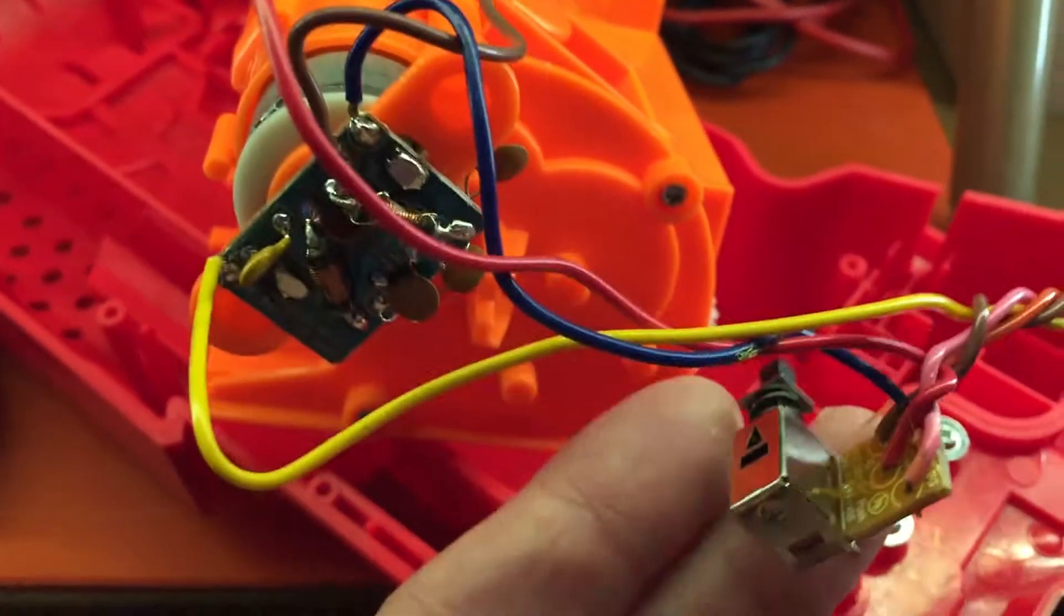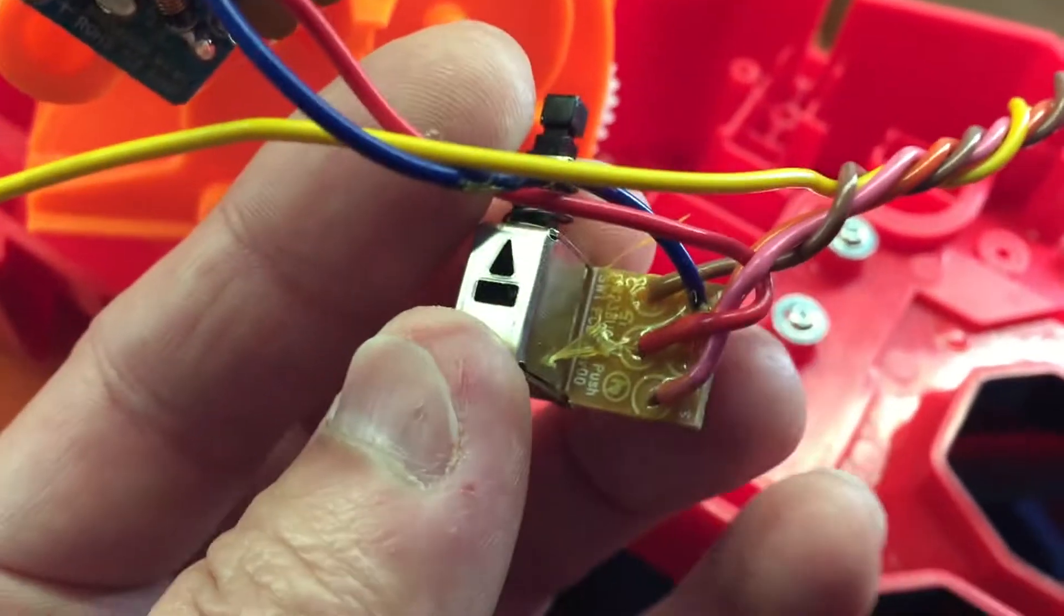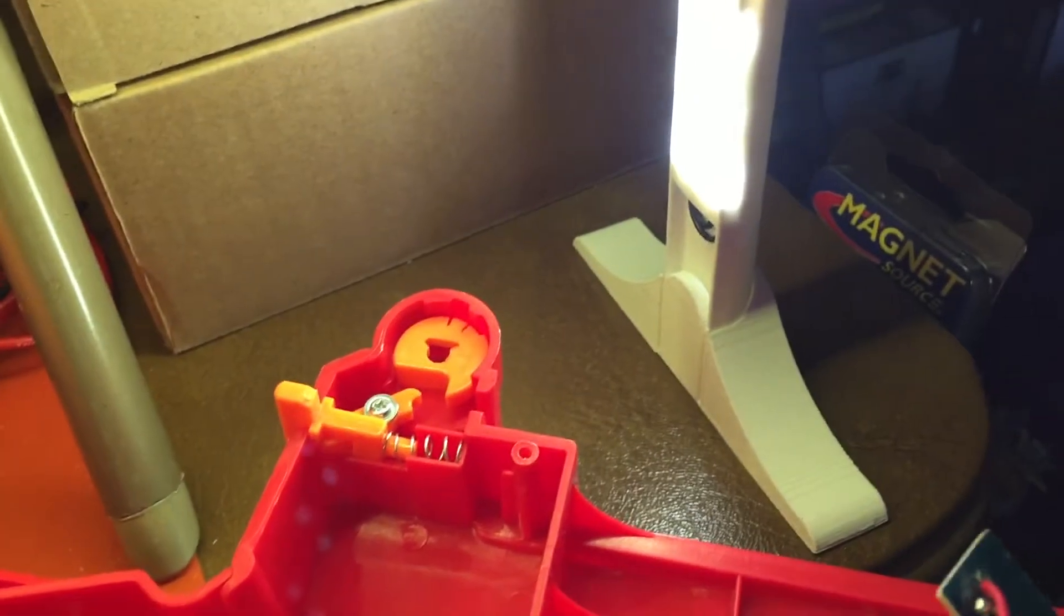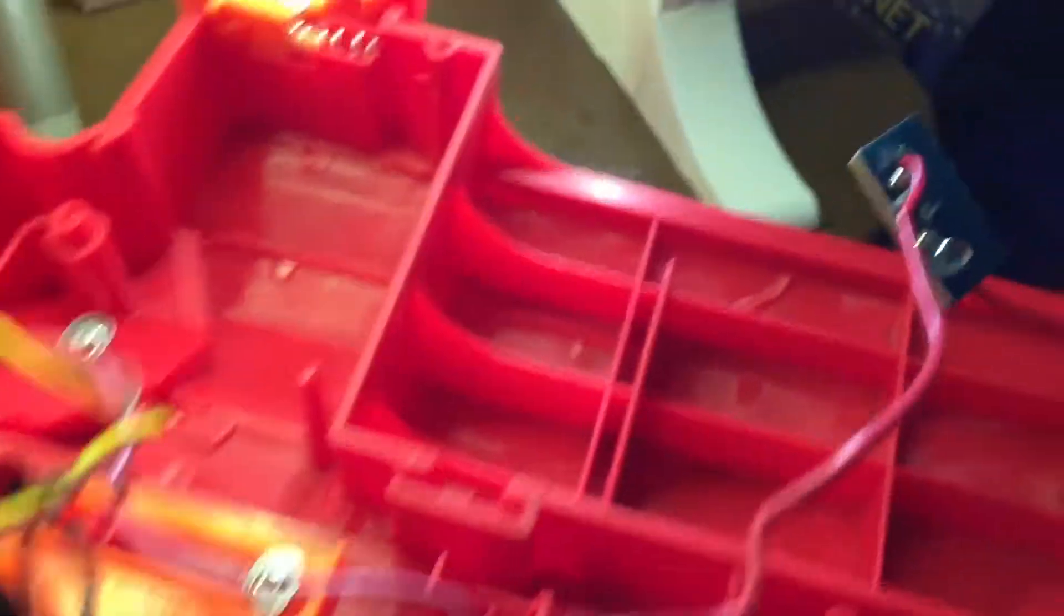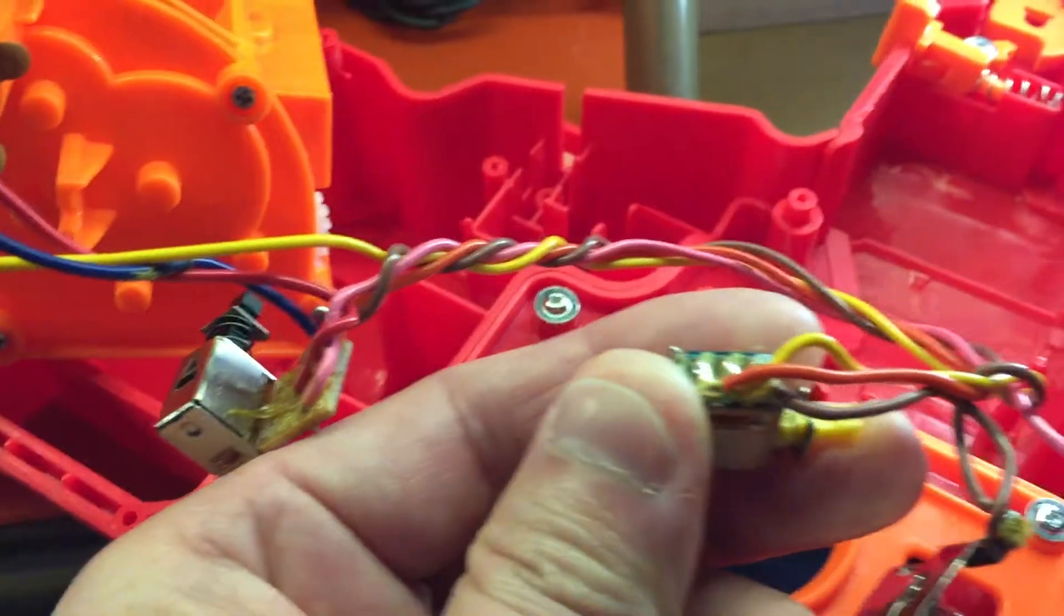The red is going to trace through this relay switch which is for the jam door. The red goes in, and the orange goes to the trigger switch.